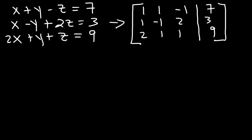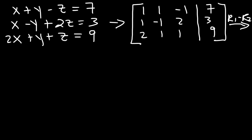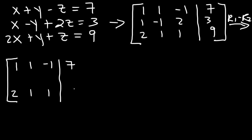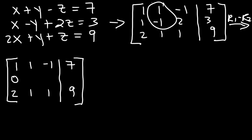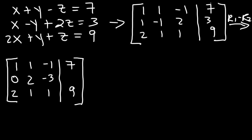The first thing I'm going to do is subtract row 1 and row 2 and apply that operation to row 2, because that will convert the leading entry of row 2 into a 0. Row 1 and row 3 stay the same. Performing R1 minus R2: column 1 gives 1 minus 1 = 0, column 2 gives 1 minus negative 1 = 2, column 3 gives negative 1 minus 2 = negative 3, and column 4 gives 7 minus 3 = 4.